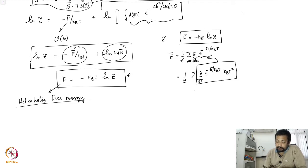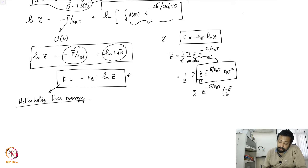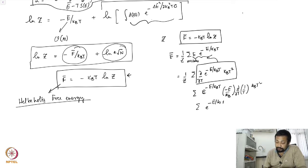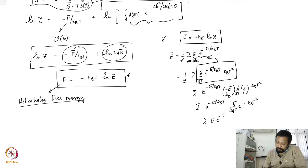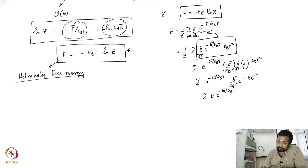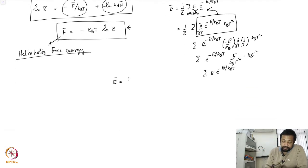Expanding the derivative: ∂/∂T of e^{-e/kBT} gives e^{-e/kBT} times ∂/∂T of (1/T) times kBT². This recovers the expression e × e^{-e/kBT}. Therefore, the average energy E-bar equals (1/Z) × sum over all states of [∂/∂T of e^{-e/kBT}] times kBT².